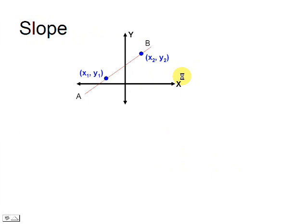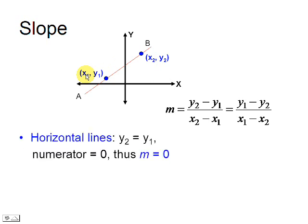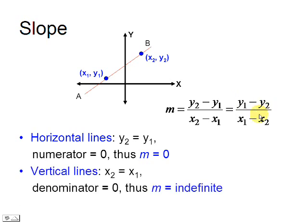The slope of a line is the vertical difference of two points divided by the horizontal difference. For horizontal lines, y2 equals y1, the numerator is 0 and the slope is 0. For vertical lines, x2 equals x1, the denominator is 0 and the slope is undefined.